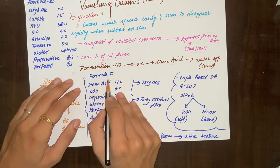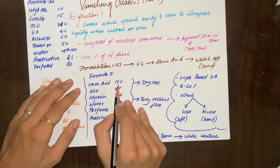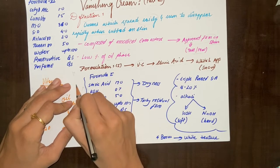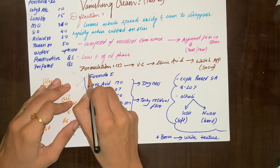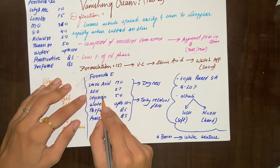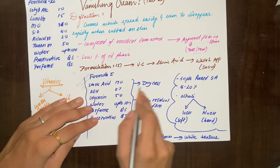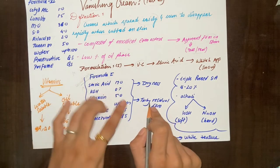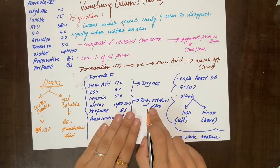Now let's see this formulation: steric acid, KOH, glycerin, water, perfume, and preservative. Steric acid and KOH, glycerin as humectant, water, then perfume and preservative. This cream formulation can provide dryness and itchy residual - this is the drawback.